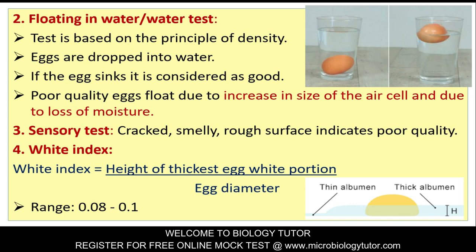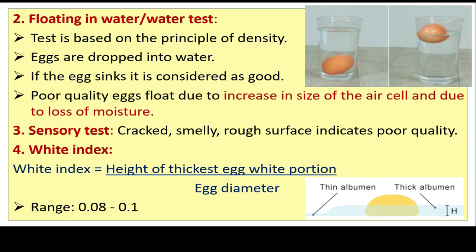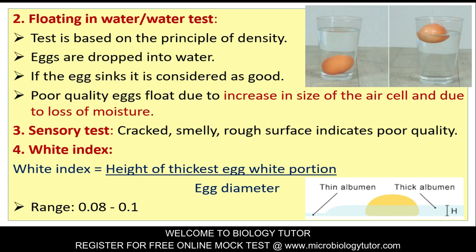Floating in water (water test): This test is based on the principle of density of the egg. Eggs are dropped into water. If the egg sinks, it is considered good. Poor quality eggs float due to the increase in size of the air cell and due to loss of moisture. Sensory test: Cracked, smelly, or rough surface indicates poor quality of egg.